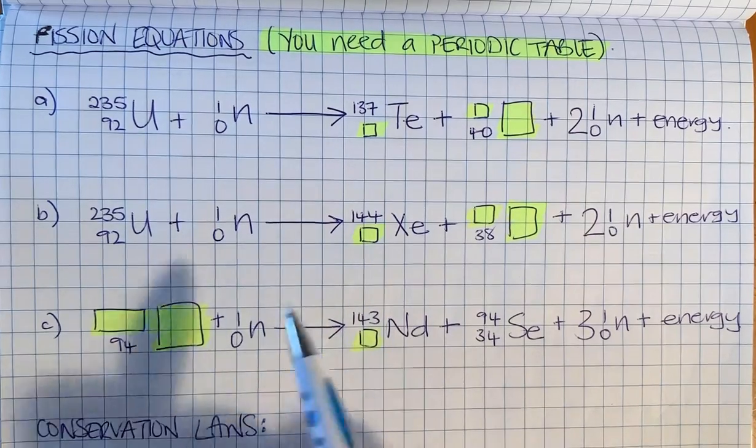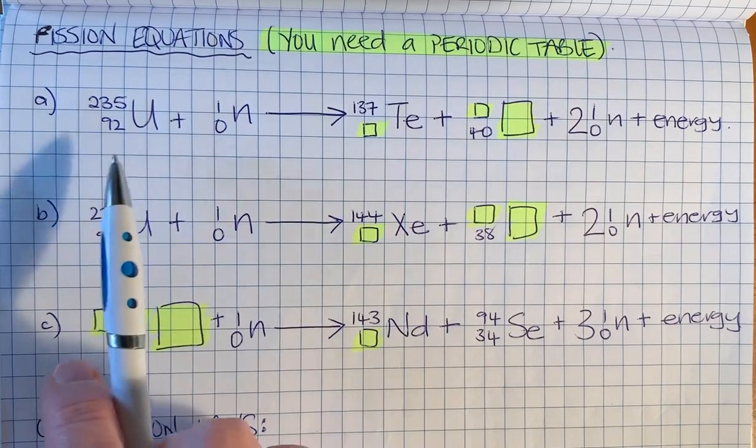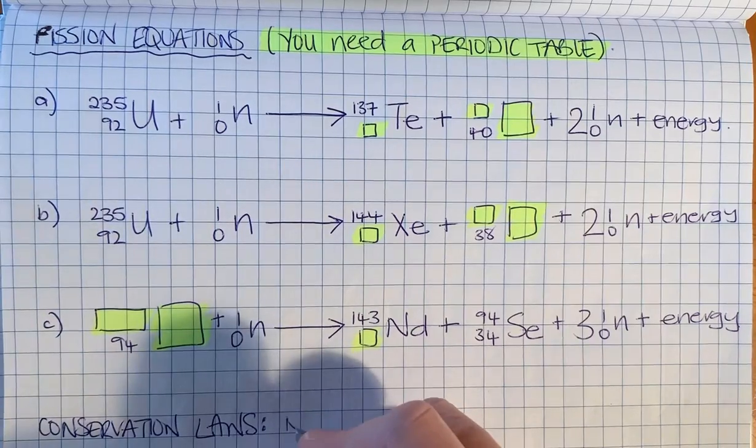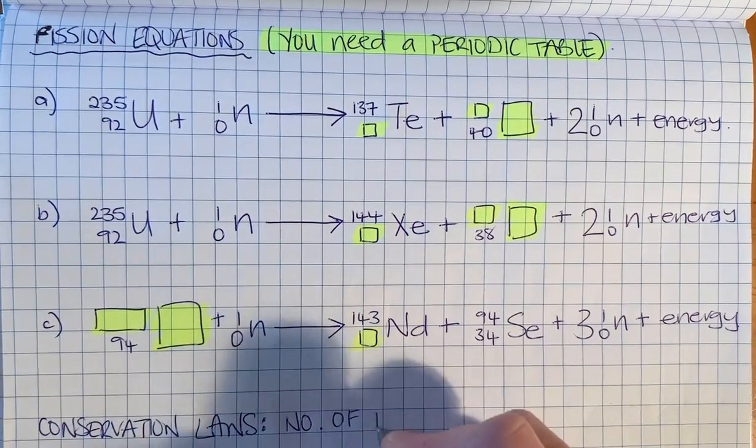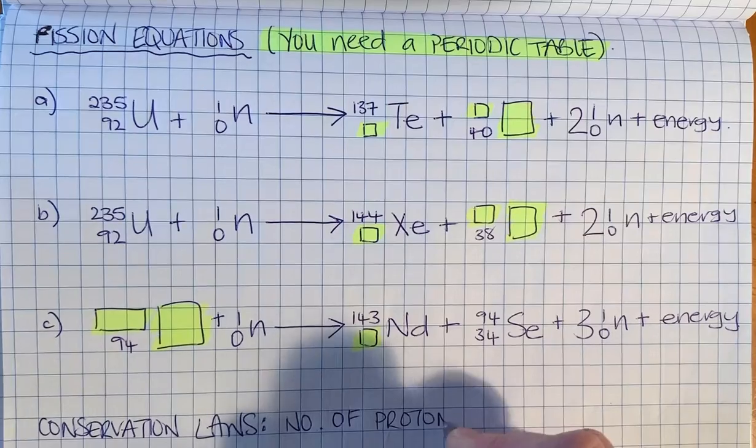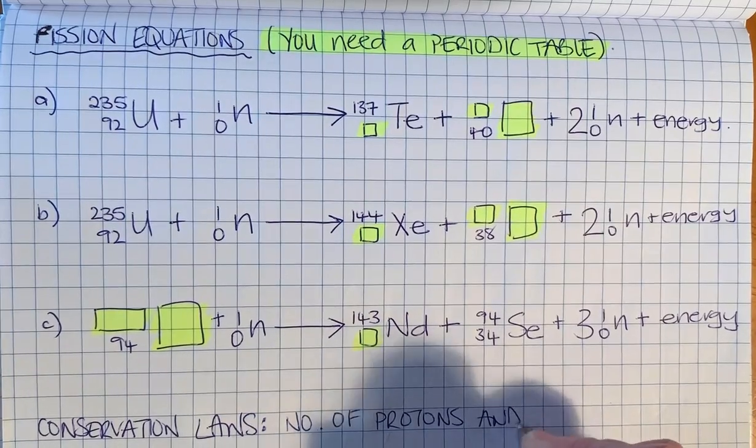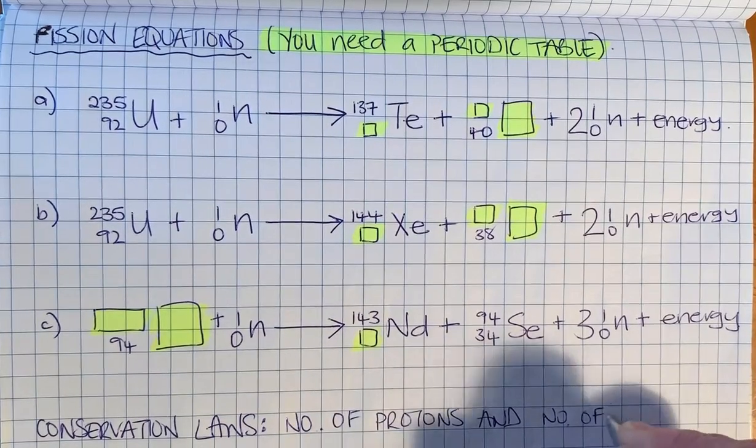The conservation law - the physics principle we need here - is that the number of protons and the number of neutrons are conserved.